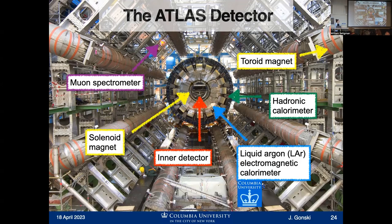A couple of the different types of particle detectors that make up the entire ATLAS experiment: we have different kinds of magnetic fields that cause the curvature of charged particles, important for detecting particles. The inner detector is made of silicon and does tracking of charged particles. Then we have two calorimeter systems. The calorimeter measures energy of particles as they pass through. I'm going to talk more in detail about the liquid argon — or LAr — electromagnetic calorimeter, because that's what has been, to a great extent, designed and constructed here at Columbia.